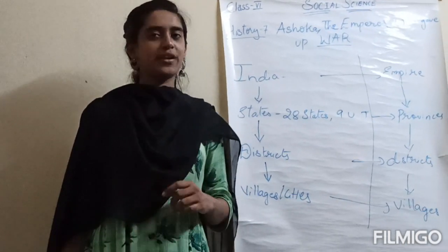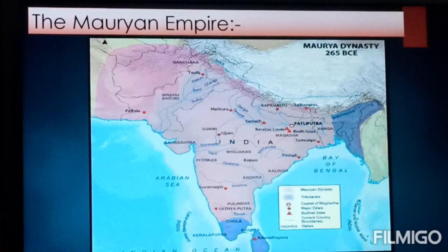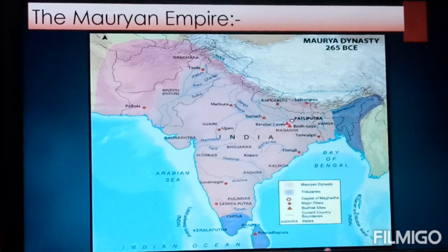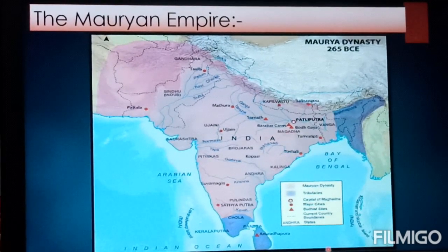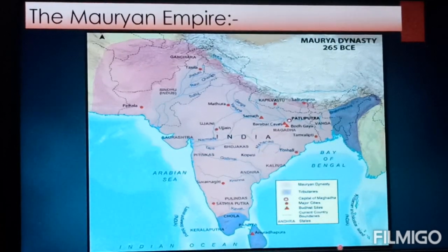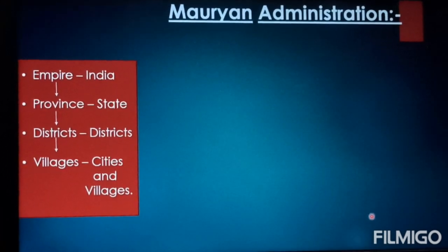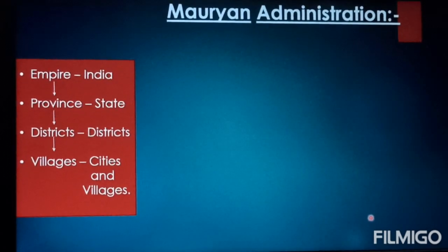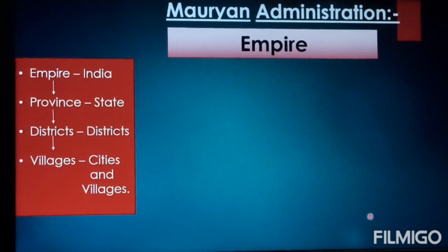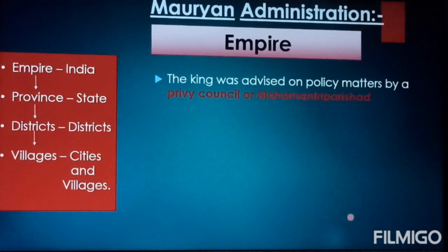You can see on the map how far the Mauryan Empire extended — it was much larger than today's India. Just like Indian administration, the Mauryan Empire was divided into many parts for better administration. The king was advised on policy matters by a private council called the Mahamantri Parishad — a group of experts who gave their best advice on what should and should not be done.